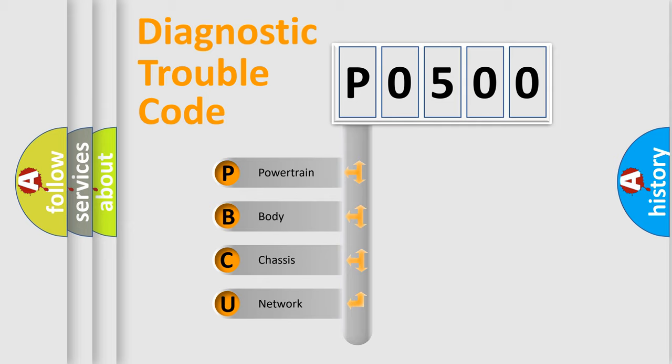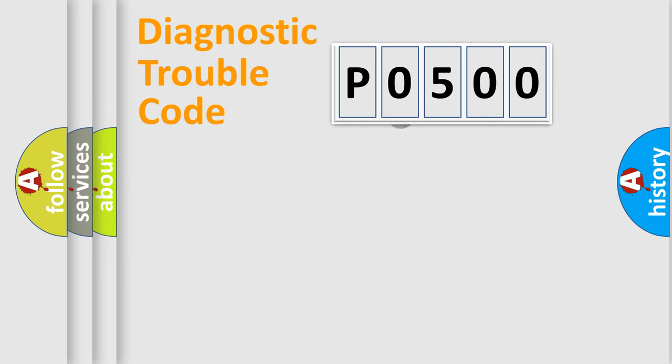We divide the electric system of automobile into the four basic units: Powertrain, body, chassis, network. This distribution is defined in the first character code.